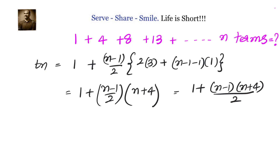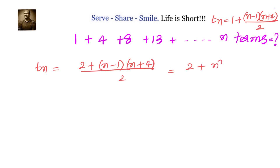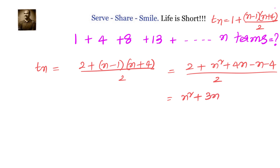For n equals 4, we should get 13. With n equals 4: (4 minus 1) is 3, and 3 times 8 over 2 is 12, so 12 plus 1 is 13. We have confirmed our nth term formula. Now let us simplify: Tn equals 1 plus (n minus 1)(n plus 4) over 2, which gives (2 plus n² plus 4n minus n minus 4) over 2, simplifying to (n² plus 3n minus 2) over 2.